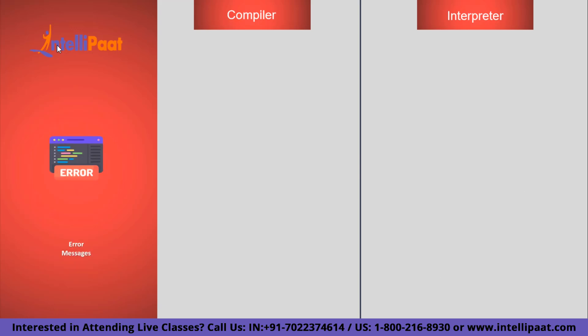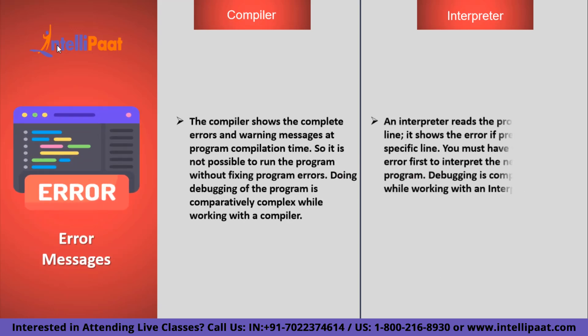Finally, we have error messages. The compiler shows complete errors and warning messages at program compilation time, so it is not possible to run the program without fixing errors — hence debugging is comparatively complex with a compiler. In contrast, the interpreter reads the program line by line and shows the error at the specific line where it occurs. Although you must correct the error manually to interpret the next line, the process of debugging is comparatively much easier with an interpreter.